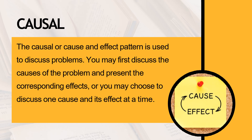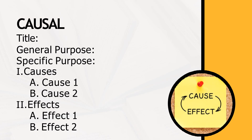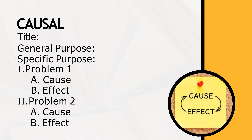Third is the causal or cause-and-effect pattern, used to discuss problems. You may first discuss the causes of the problem and present the corresponding effects, or you may discuss one cause and its effect at a time. There are two ways to outline this pattern: you can highlight all the causes first and then discuss the effects, or you can separate them — for example, problem one with its cause and effect, then problem two with its cause and effect. Either approach works.